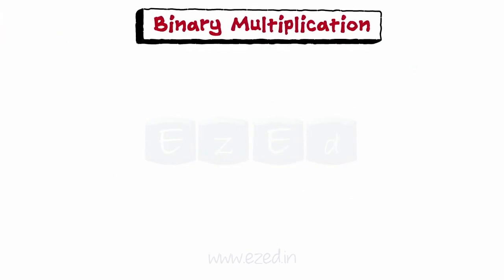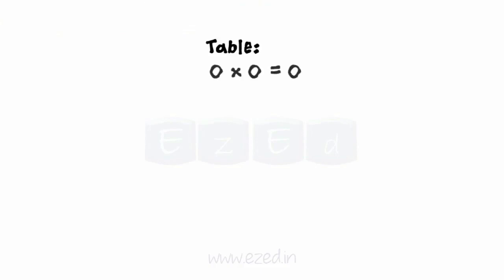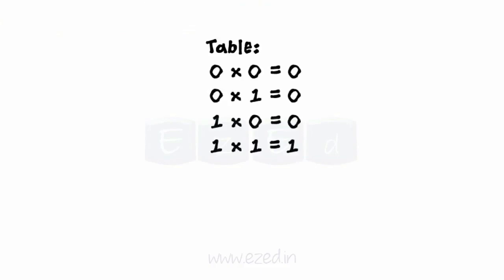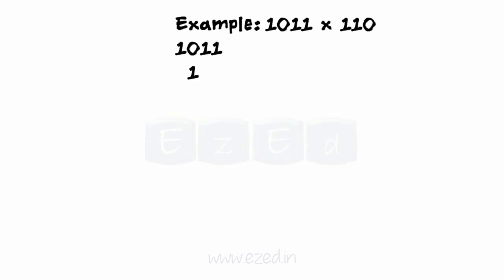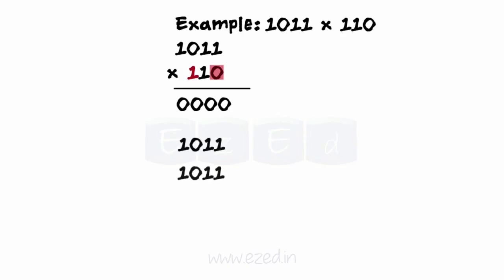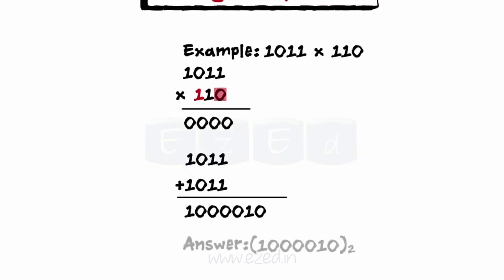Moving on to binary multiplication. The table for binary multiplication is given. Using this table, let us study an example. Starting the multiplication from the LSB of 110: zero multiplied by any number is zero. We get this; then we move on to consider the next bit, which is one, so we get the same number back. Again, one multiplied by 1011 gives the same number. Finally, we add up all the results and we get the final result of multiplication.